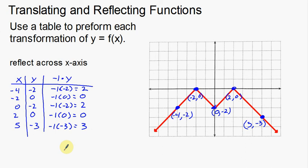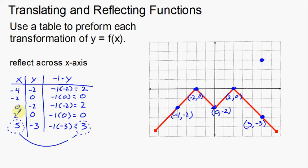These are the x coordinates I'm using and these will be my new y coordinates for the new function. Now I need to take all these new points and graph them. So: 5, 3; 2, 0 — looks like we're at that same spot; 0, 2 — right here; negative 2, 0; and negative 4, 2.